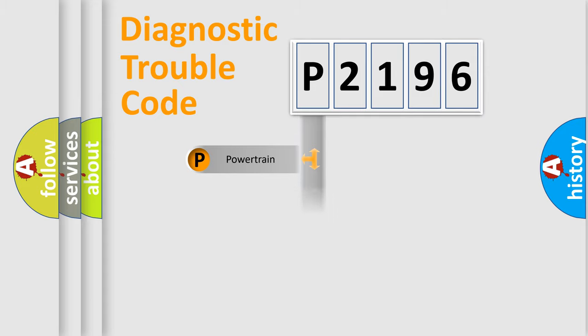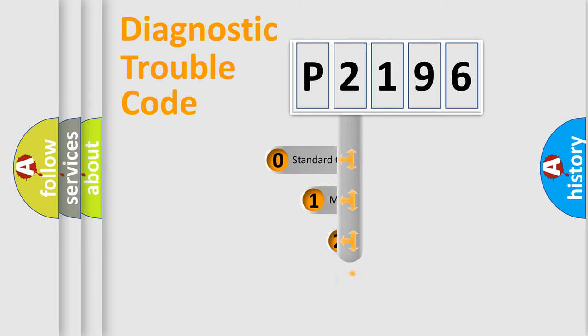Powertrain, Body, Chassis, Network. This distribution is defined in the first character code.